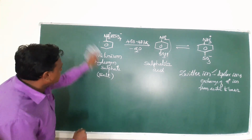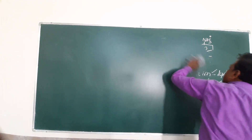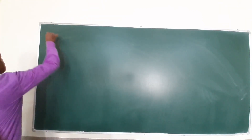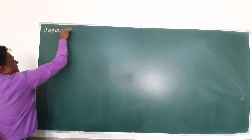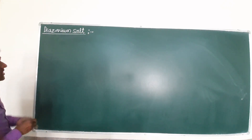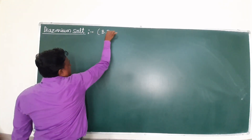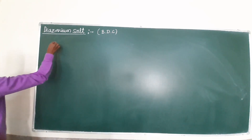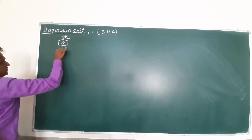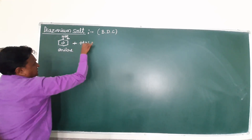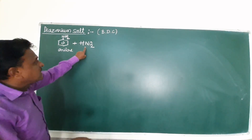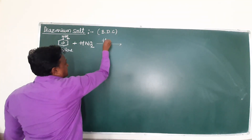Your next unit is BDC — benzene diazonium salt — mentioned in our syllabus. A very interesting reaction is the diazonium salt. We know this is a salt, abbreviated as BDC, which stands for benzene diazonium chloride. When aniline reacts with nitrous acid — where nitrous acid is prepared from NaNO₂ and HCl — a diazotization reaction occurs.